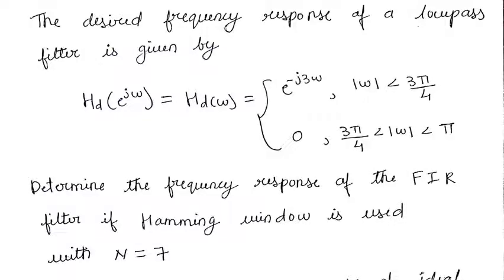The question reads as: The desired frequency response of a low-pass filter is given by HD of omega equals e raised to minus j 3 omega for modulus of omega less than 3 pi by 4, and 0 for modulus of omega in the range 3 pi by 4 to pi.